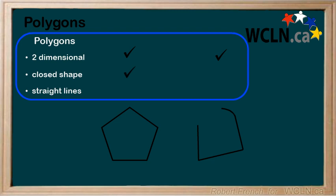Second, the first shape is closed while the second is not. Third, the first shape is made up of straight lines while the second shape has a curved line.